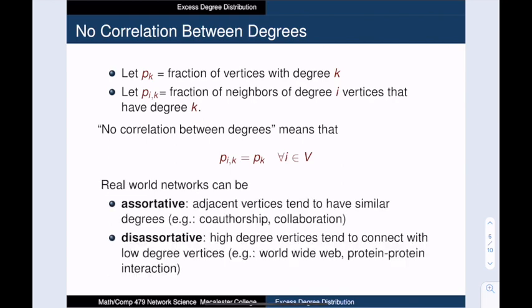Now we should note that this no correlation requirement does not apply to many real world networks. In some of those networks, high degree vertices like to connect to other high degree vertices. Such a network is called assortative.